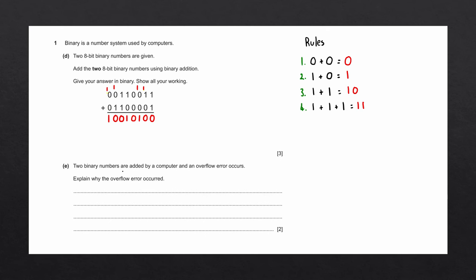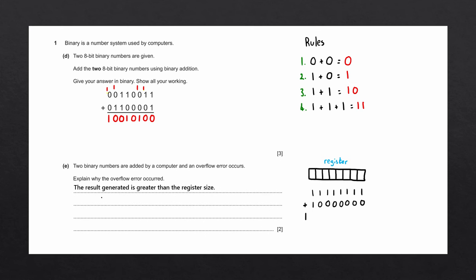Question E says two binary numbers are added by a computer and an overflow error occurs. Explain why the overflow error occurred. When adding two numbers, we store the result in a register, which has a predetermined number of bits. If our computation gives a result with too many bits, the register will overflow. For example, adding these two 8-bit binary numbers results in a carry into the 9th bit, which can't be stored and is discarded, making the result incorrect. For two marks: the result generated is greater than the register size, and the number of bits in the register are predetermined so the result contains too many bits.